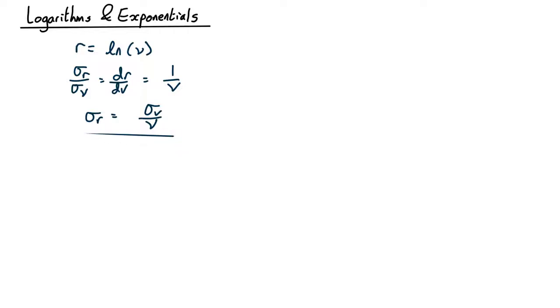So let's have an example. Let's say that x equals log y and y equals 4 plus or minus 0.1. In that case the uncertainty in x is going to be the uncertainty in y over y which is going to be 0.1 over 4 equals 0.025.